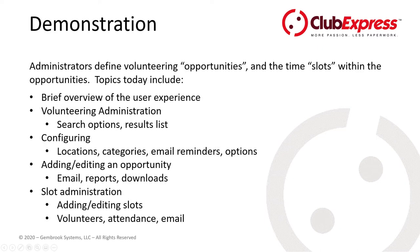Today we're going to define some volunteering opportunities and the time slots within them. I'll do a brief overview of the general user experience, then look at volunteering administration — the admin screen and results list. We'll configure locations, categories, email reminders, and options. We'll create an opportunity and look at its email reports and download icons, then add four slots to an opportunity, look at who's volunteered, track attendance, and how to send emails to volunteers.